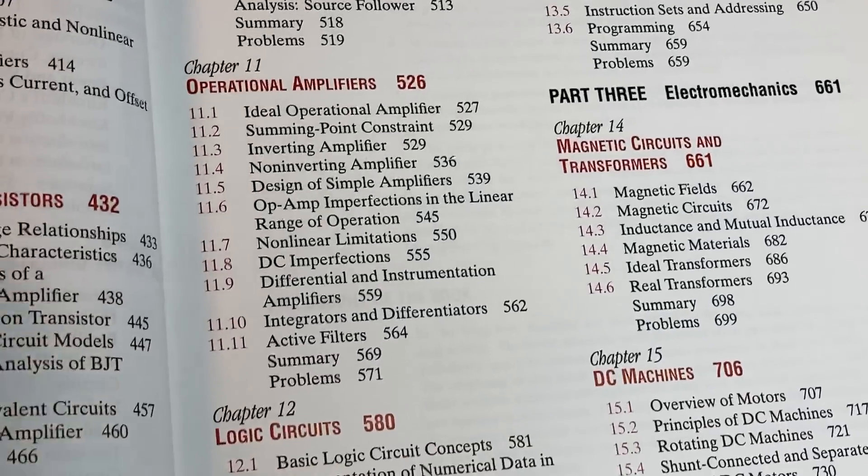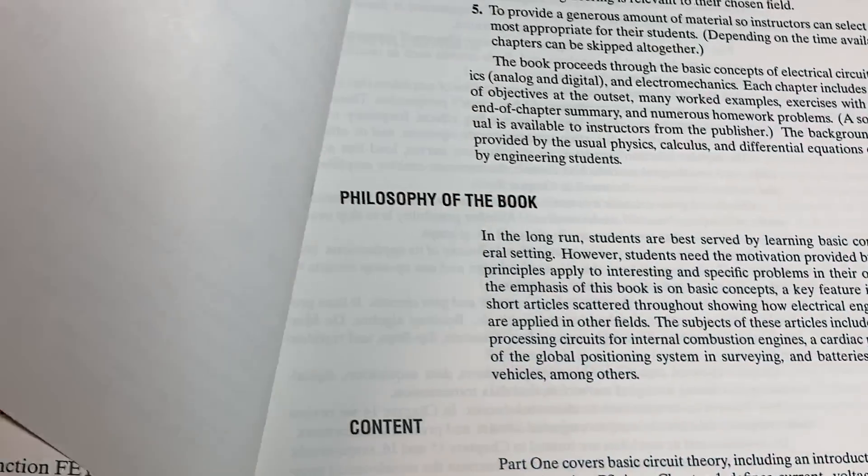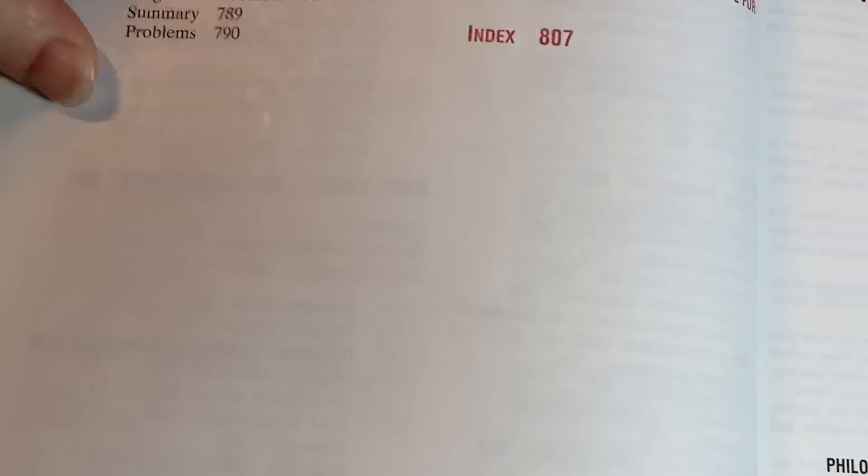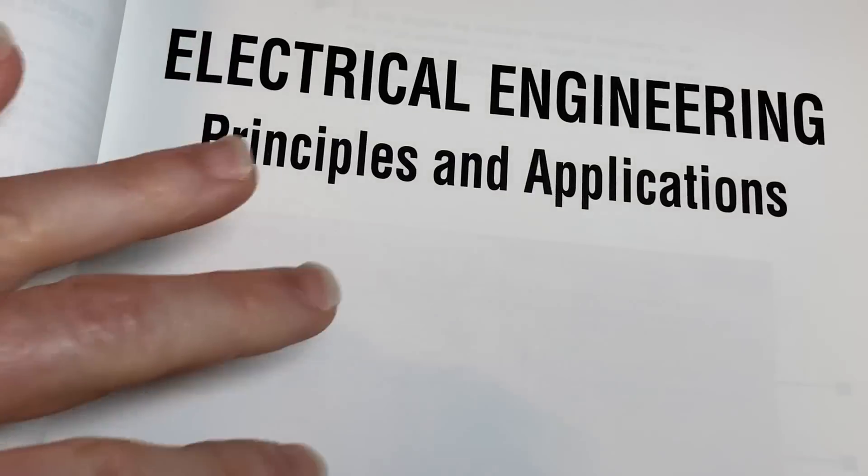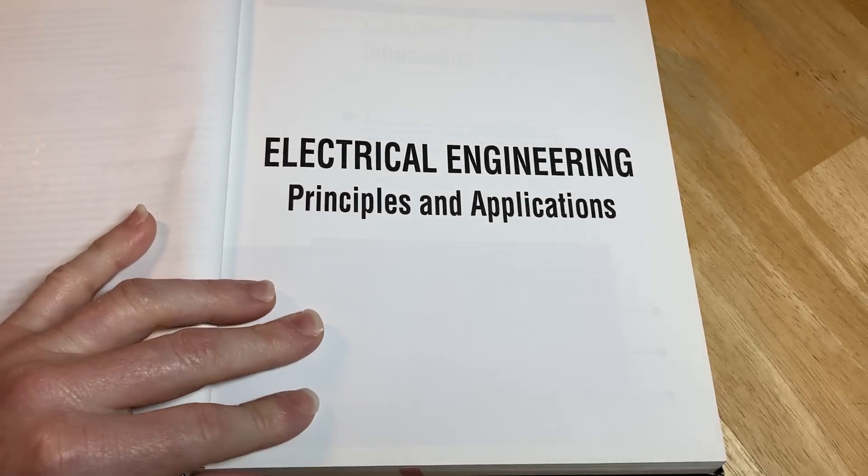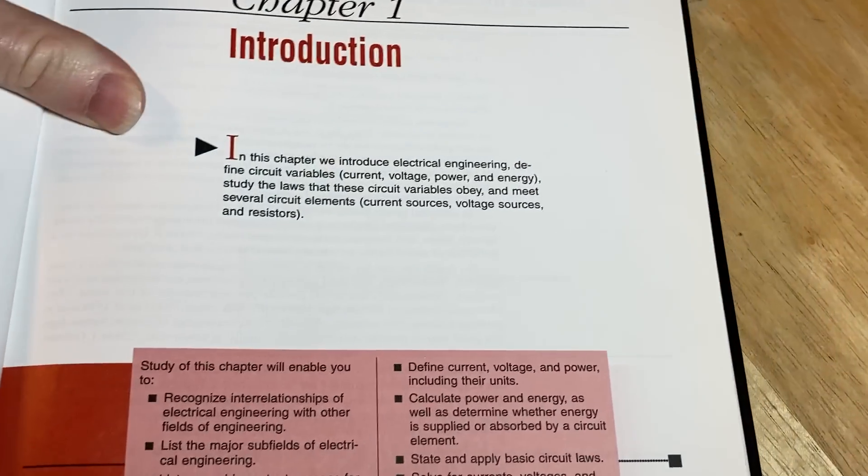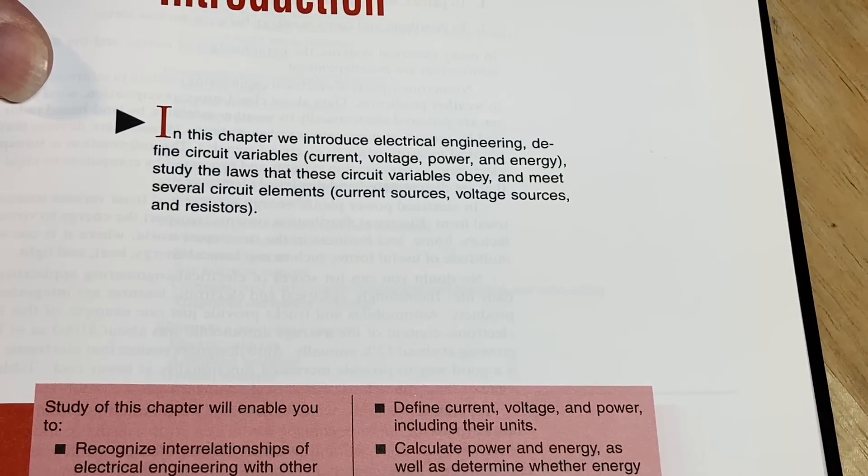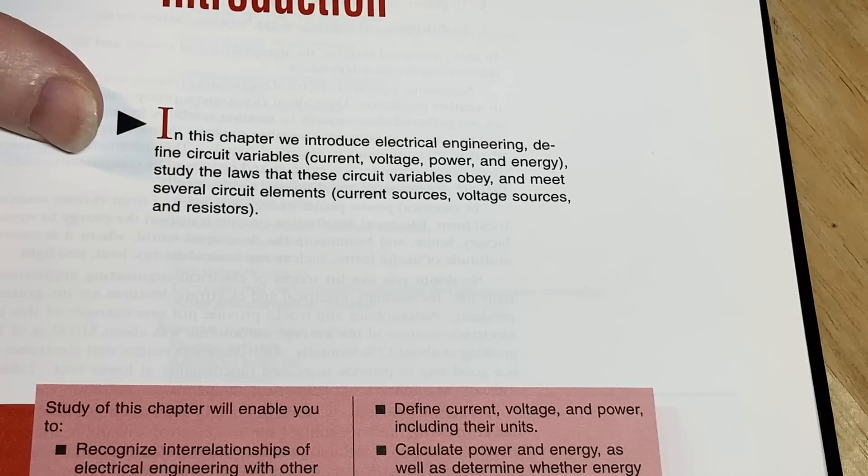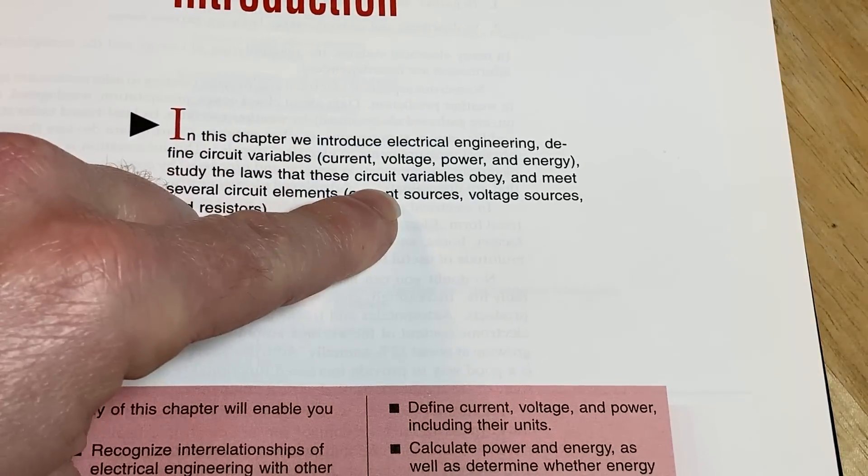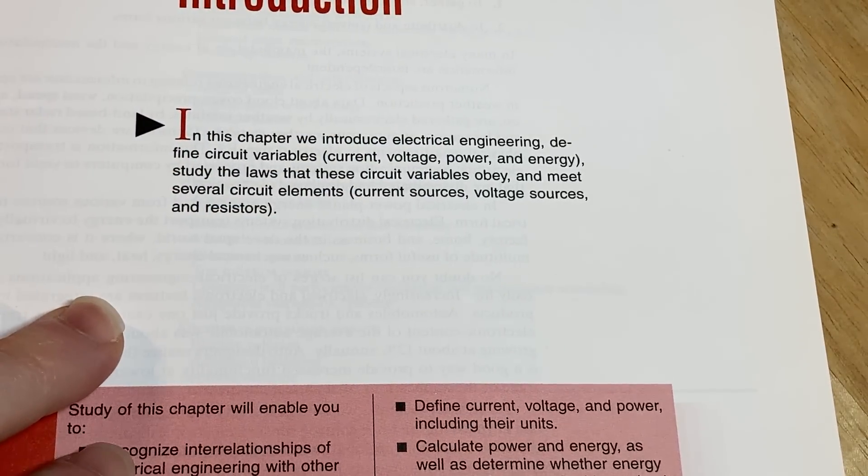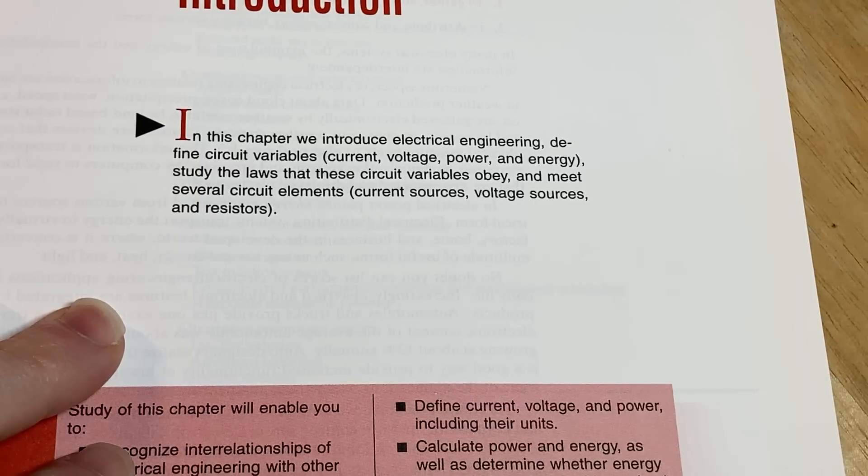This is really cool. It's really interesting because I think it would be cool if people who took engineering classes could learn this, maybe at the same time they were learning some of the math so they could see what it's like. In this chapter, we introduce electrical engineering, define the circuit variables: current, voltage, power, and energy. Study the laws that these circuit variables obey and meet several circuit elements.